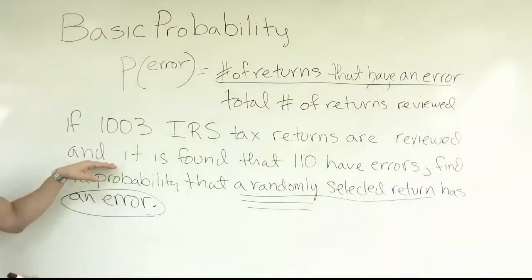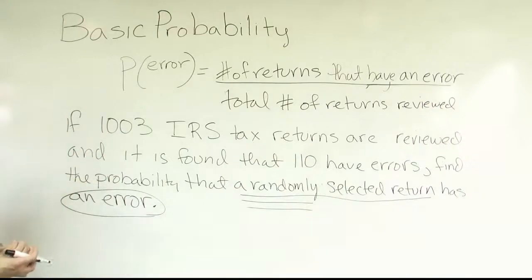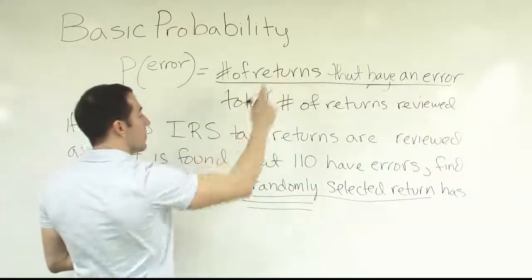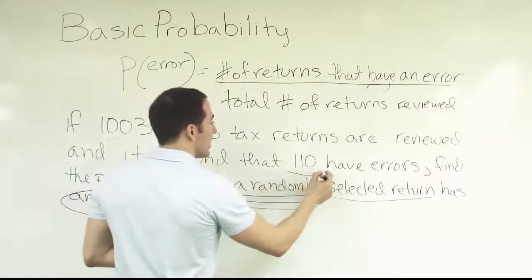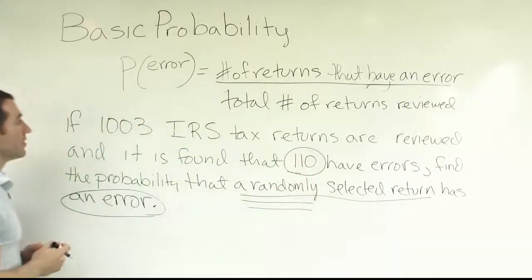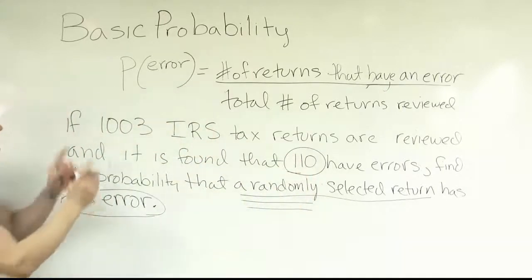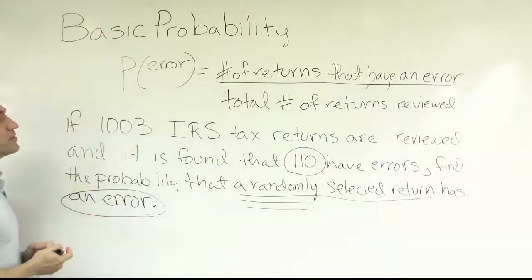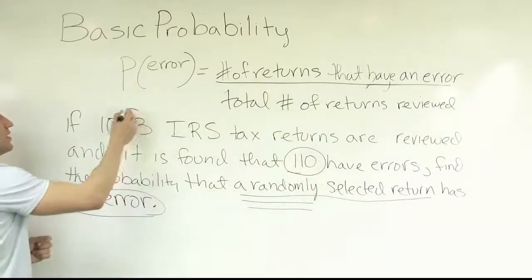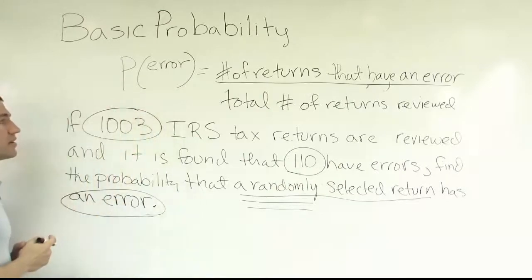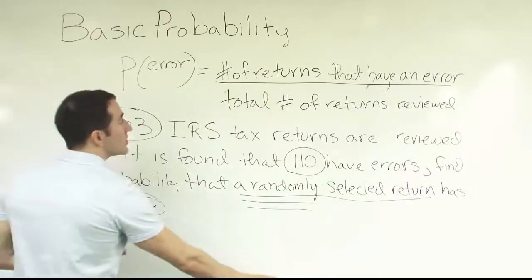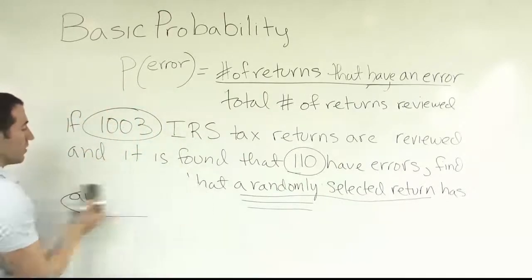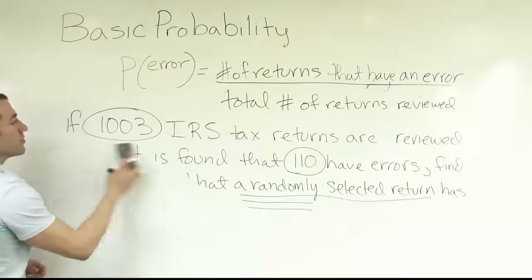So let's find those numbers in the data. The number of returns that have an error — it said 110 have an error, so we have that value. The total number of returns reviewed is 1003. So that's our fraction; to solve the problem we just form a ratio of those two numbers.